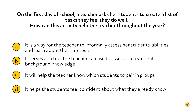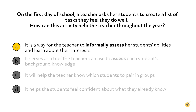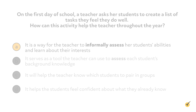Here's another example. On the first day of school, a teacher asks her students to create a list of tasks they feel they do well. How can this activity help the teacher throughout the year? When faced with a question about assessment, it is helpful to go with the answer choice that is as detailed as possible. In this question asking about the value of an activity, there are two answers that include the word assess. However, one of them includes the key vocabulary word informally. To pick this response shows the examiner that you can elaborate on which kind of assessment is needed.